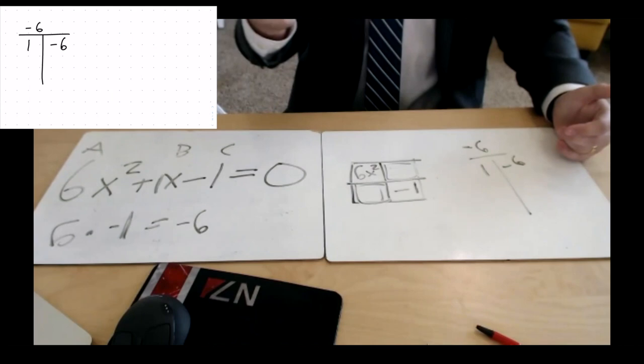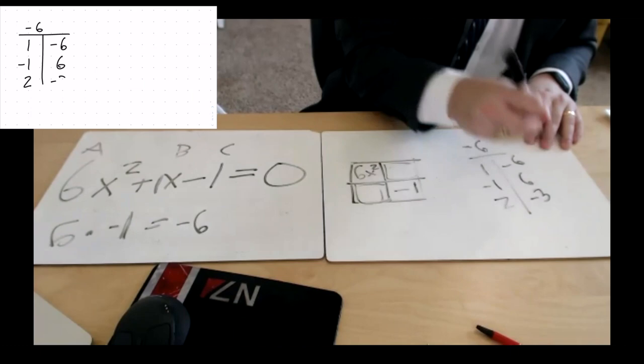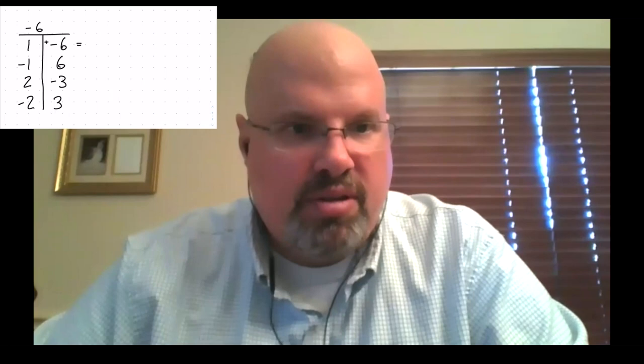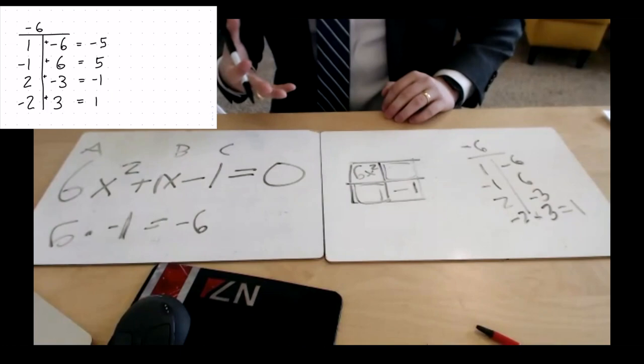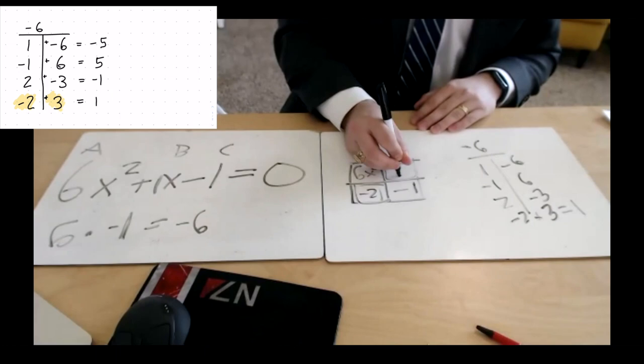Could I reverse the signs to get more variance? Yes, like negative 1 and positive 6. And then let's try 2 — 2 paired with negative 3 — and then you can reverse those signs: negative 2 and positive 3. If you add those two values together, you're looking for one set to equal positive 1. That would be negative 2 and positive 3, because if I add those together I get positive 1. And there you go — those are your two peanut values.